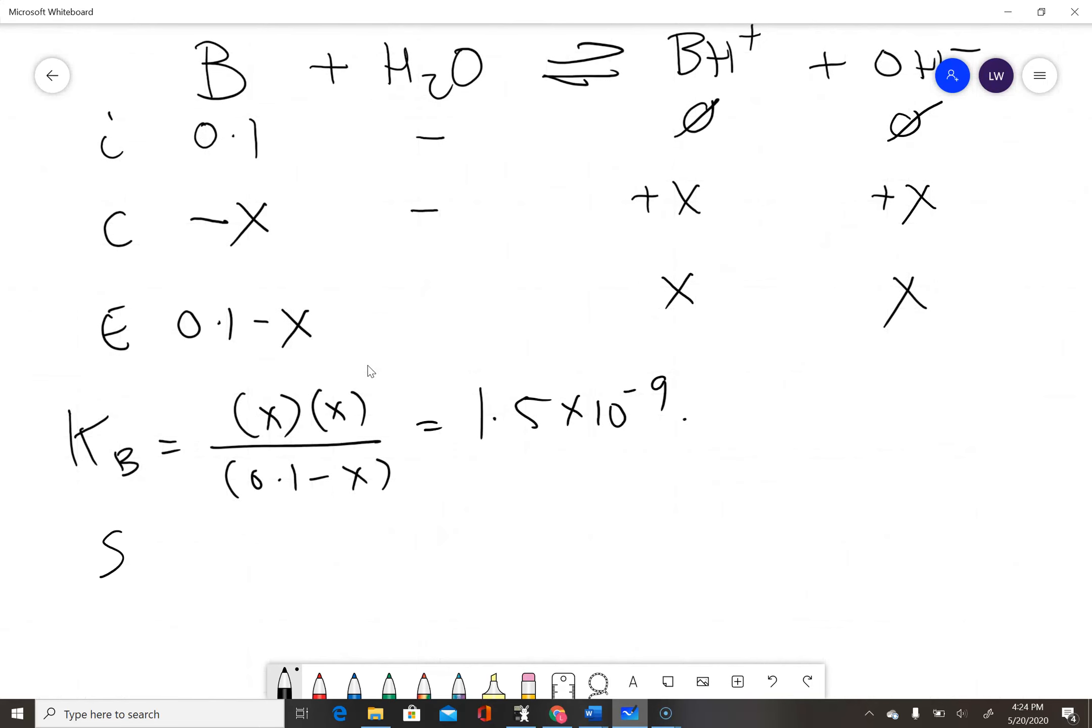I'm going to solve for x using the solver. Having done that, x equals 1.225 times 10 to the minus 5 molar, which is equivalent to my equilibrium hydroxide ion concentration.